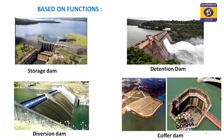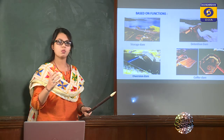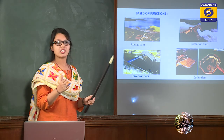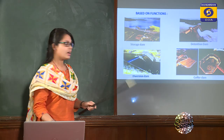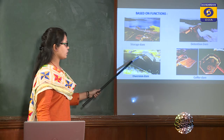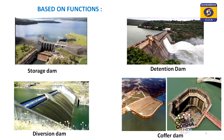A diversion dam diverts the direction of water to a different canal or pipe for hydroelectric power production or irrigation purposes. The best examples of diversion dams studied in this subject are weirs and barrages. Water can also be diverted through a conduit pipe for hydroelectric power production.